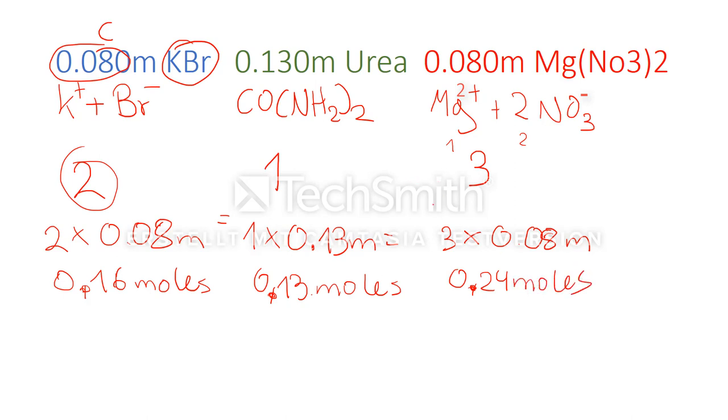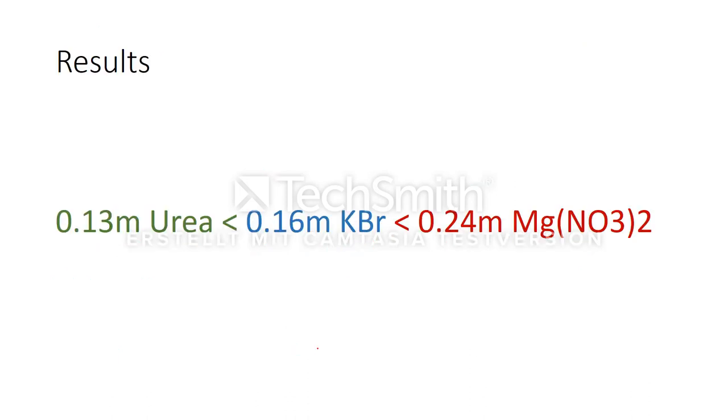Now we just have to compare those. As we can clearly see, we have the highest amount of particles if we put magnesium nitrate into water. This is our first place. Our second place is potassium bromide with 0.16 moles. And our third place is urea with 0.13 moles. These are our results. Thanks for watching.